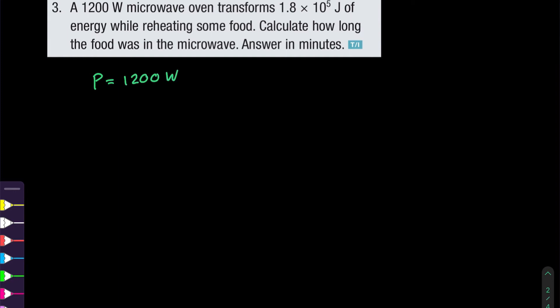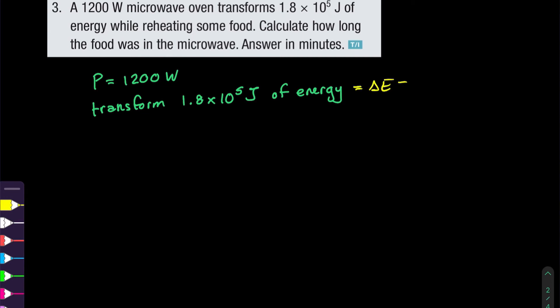The microwave transforms 1.8 × 10⁵ joules of energy. Just as before, transforming energy is the same as delta E, which is our definition of work. Since they're asking us to calculate how long the food was in the microwave during this energy change, we'll use the power formula and rearrange it for the change in time.